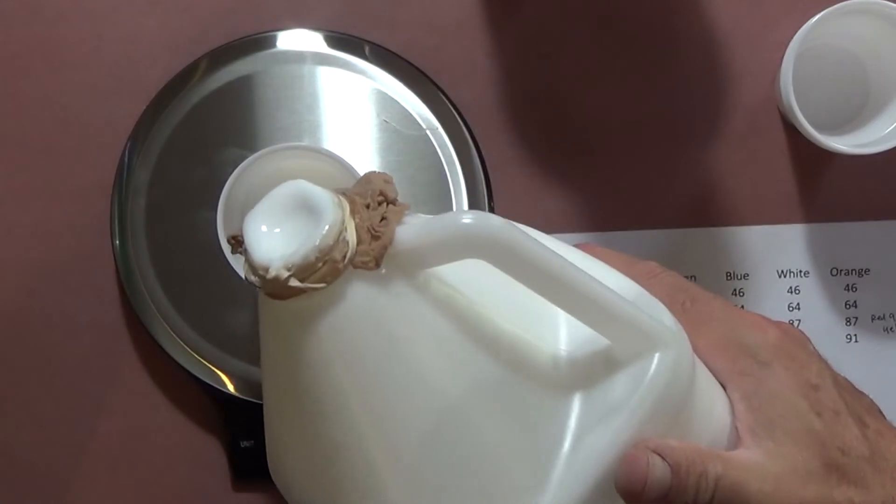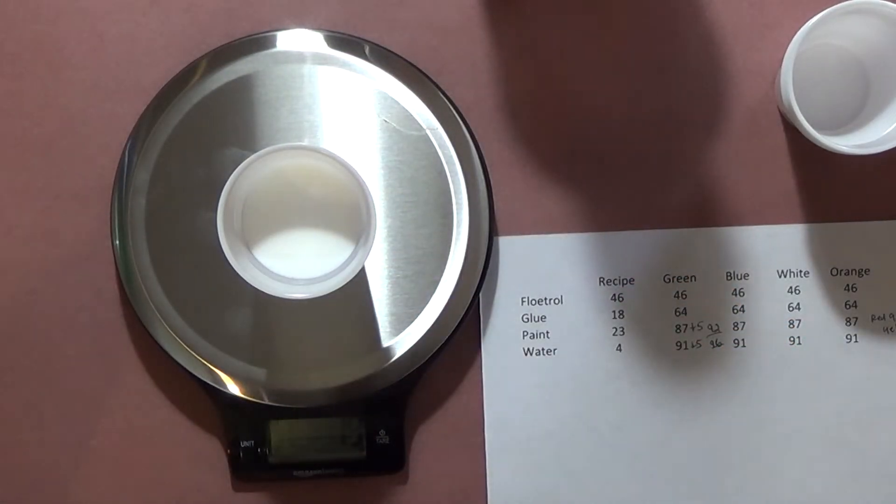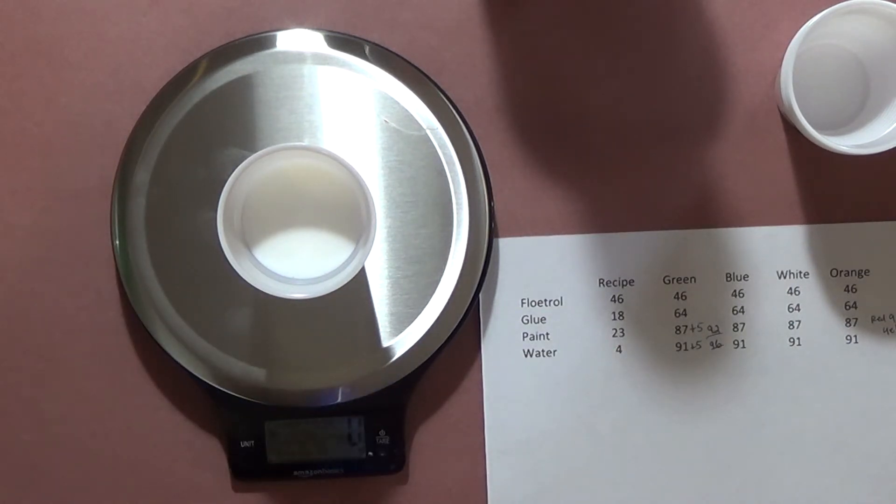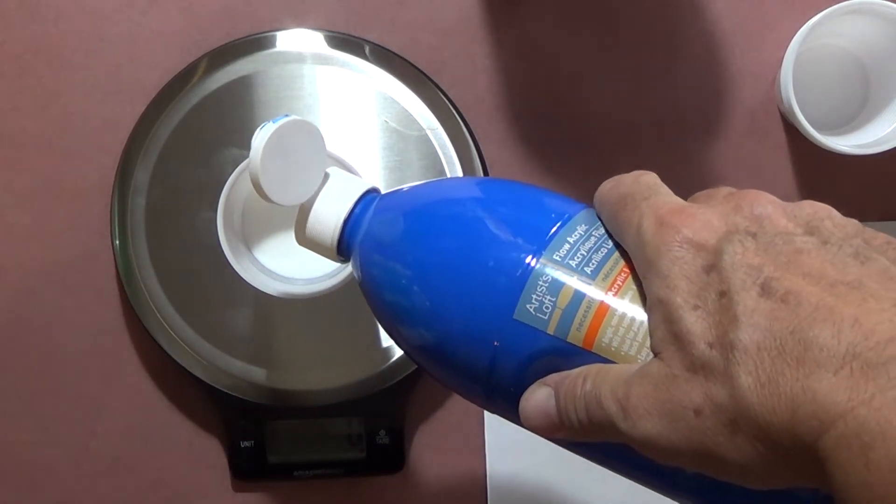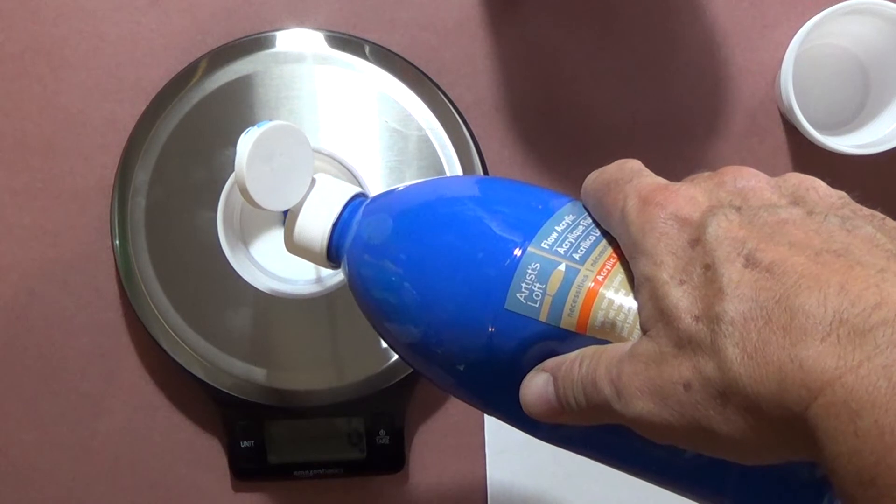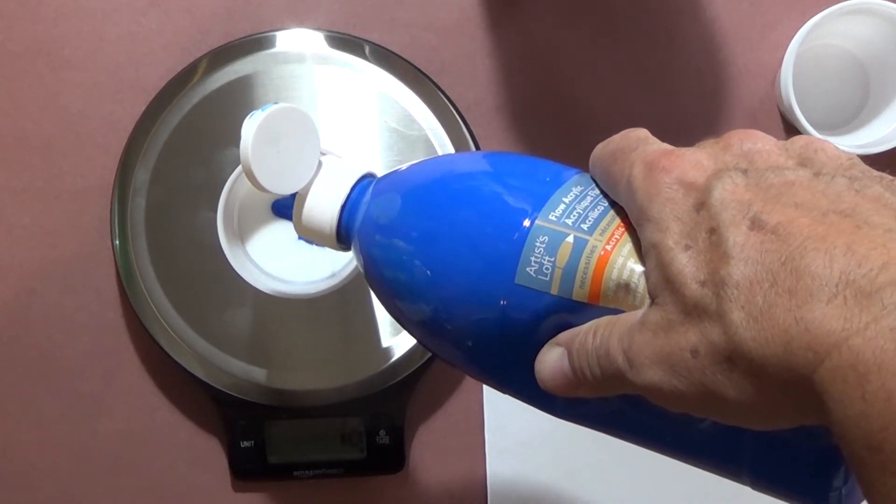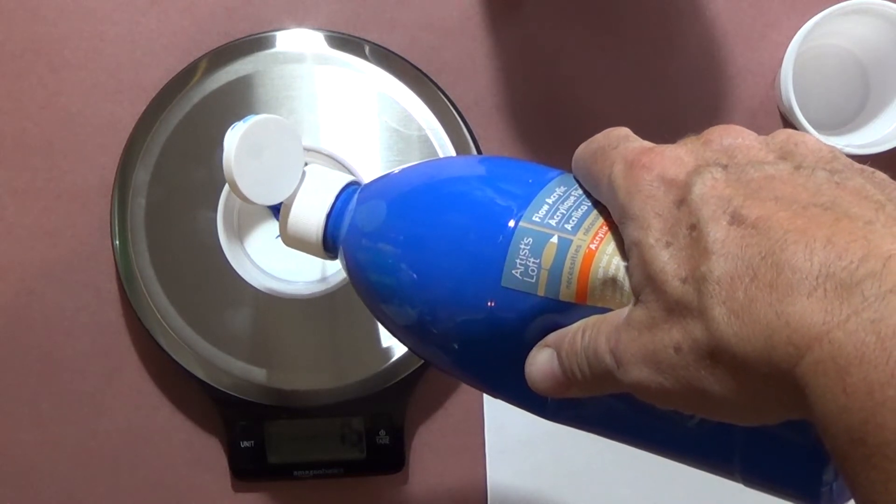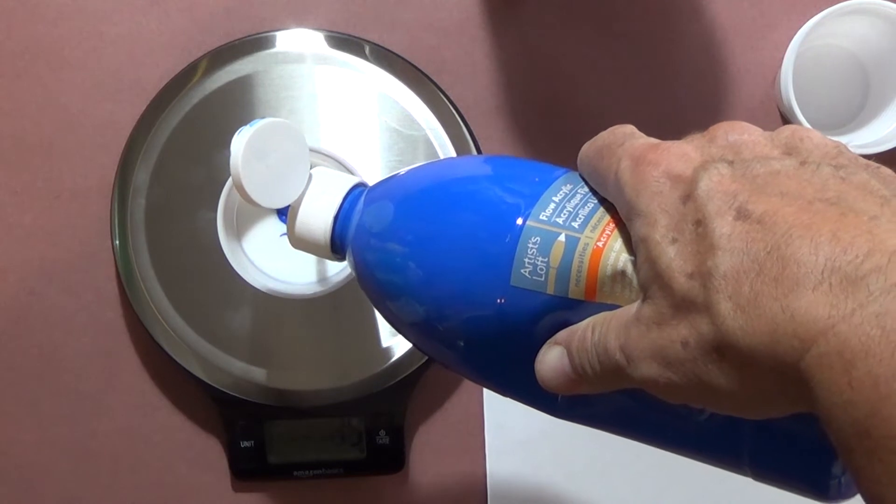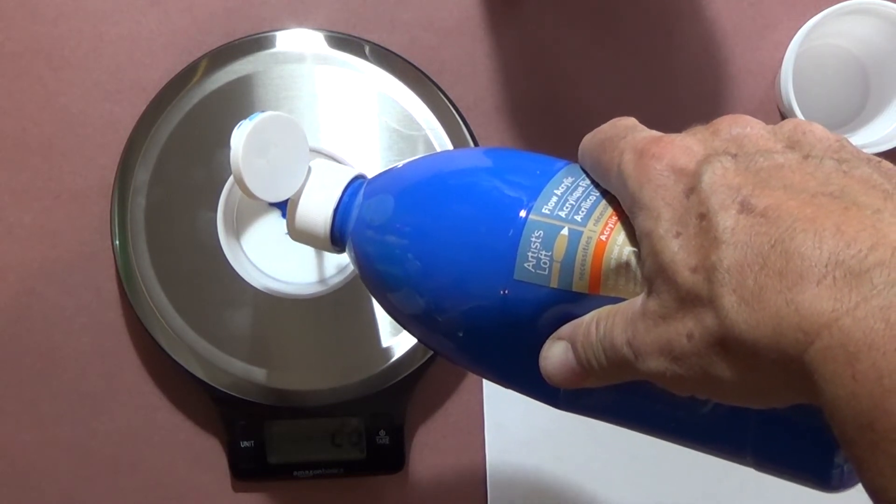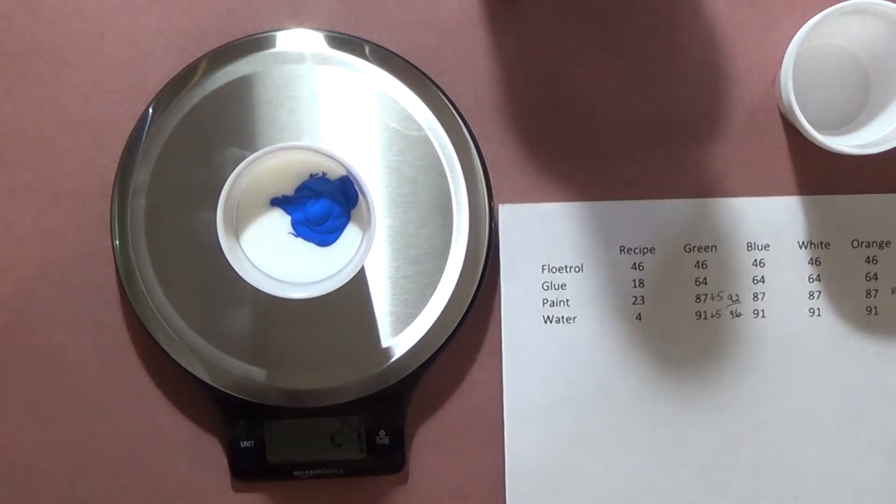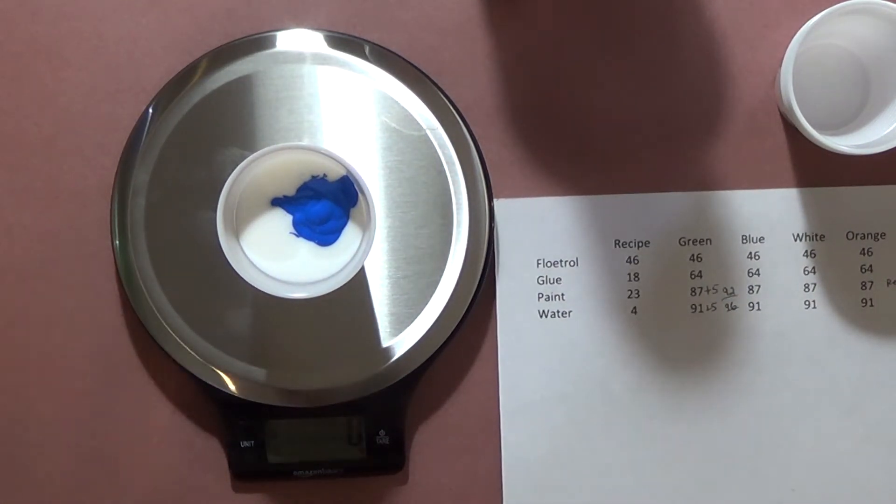Okay, so now I'm at 18 grams. Actually went to 19, that's fine too. So I'm going to zero it back out again, then I'm going to come in and add my paint. We're going to do blue this time, so I'm going to put 23 grams of the blue paint in. I'll zero my scale and then I'll just keep going up till I get back to 23. Okay, and then zero it again, and then I'll come in and add my four grams of water.